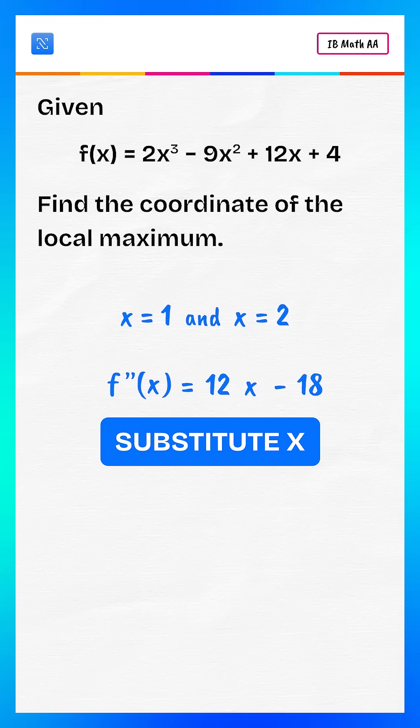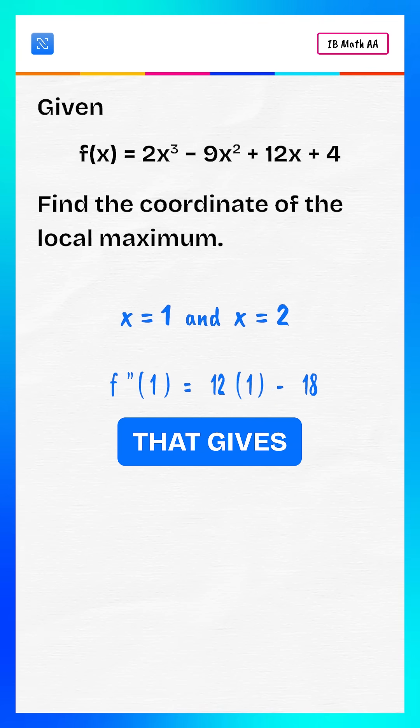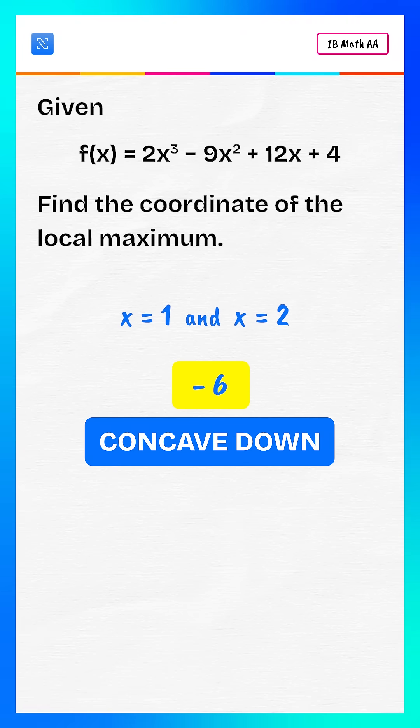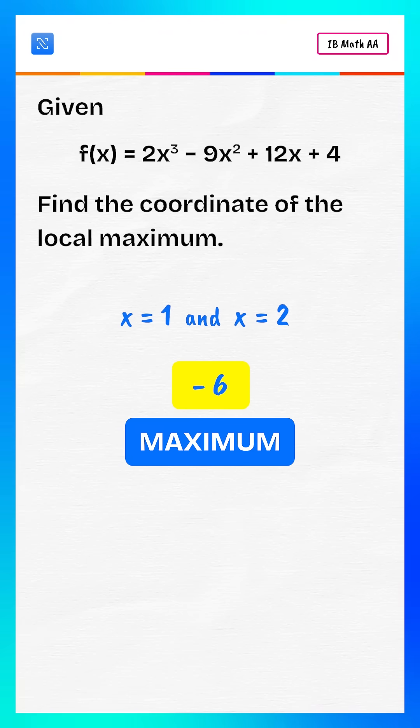Now substitute x equals 1. That gives minus 6. Since this value is negative, the curve is concave down. So this point is a local maximum.